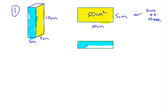There's the blue one. You have, this is 10. This is only 2. What's the area of that one? 20. 20 centimeters squared. You also have two of these.